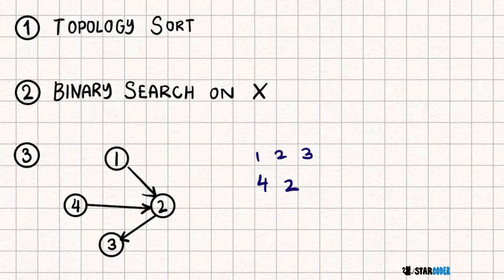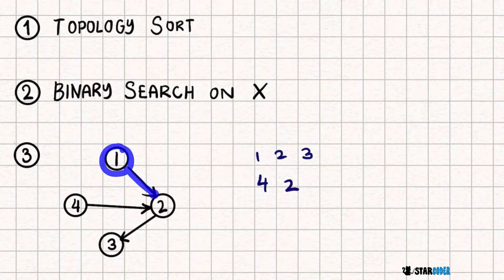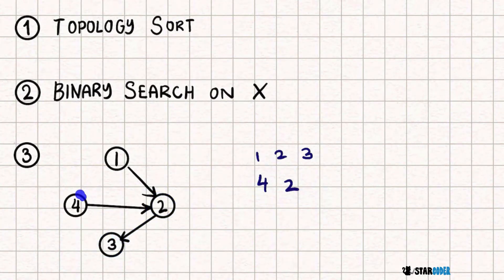We have our m observations by Farmer John. Assuming our observations are 1,2,3 and 4,2 — we can use these to build a graph where the nodes are the cows and the edges are based on each observation. For example, observation 1,2,3 means node 1 points to node 2, and node 2 points to node 3. For observation 4,2, it would be node 4 pointing to node 2. Any extra nodes just sit out without edges.